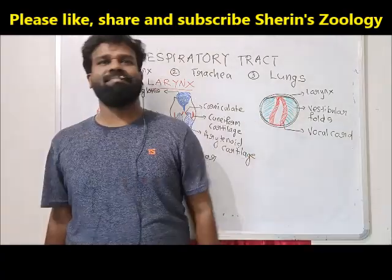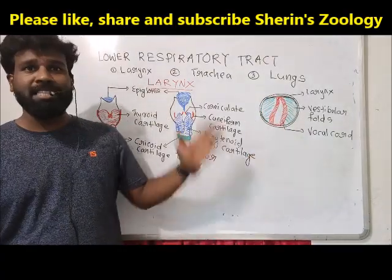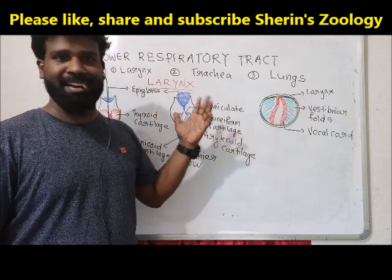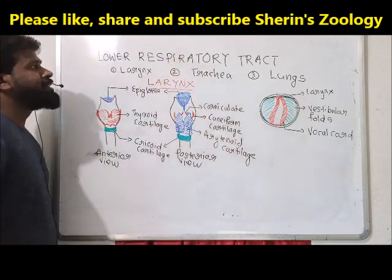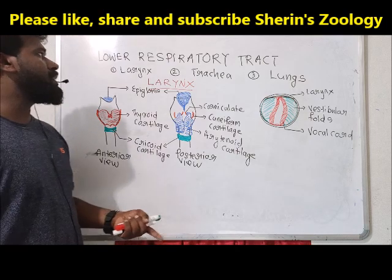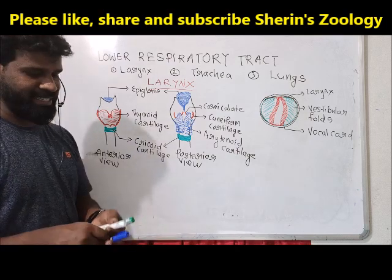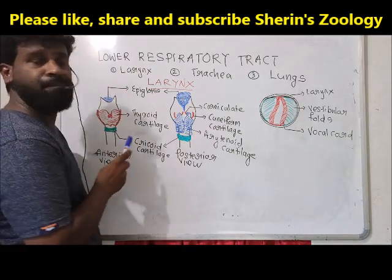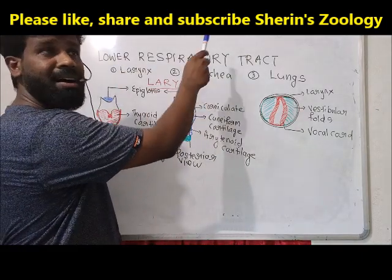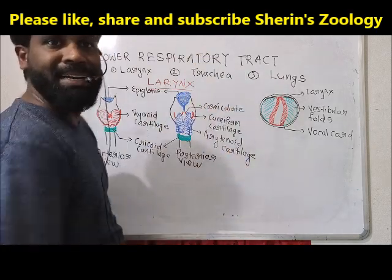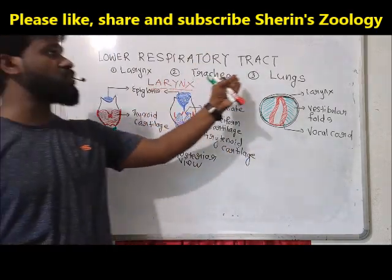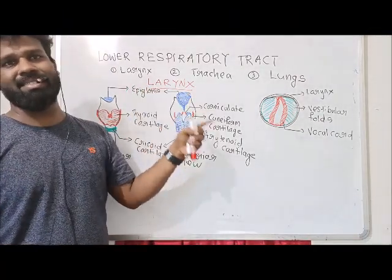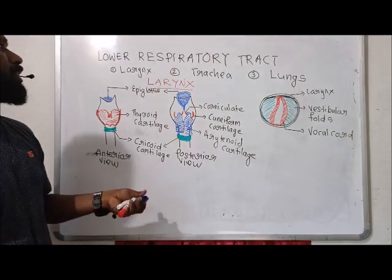Welcome back. In this video session we are going to learn about the lower respiratory tract. The lower respiratory tract comprises the larynx, trachea, and lungs. Let's begin with the larynx, the first part of our lower respiratory tract.